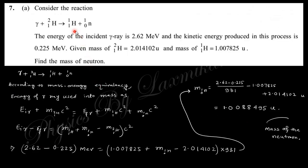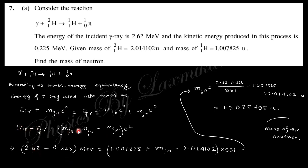The next question considers the nuclear reaction: gamma + tritium → hydrogen + neutron. The energy of the incident gamma ray and the kinetic energy produced in the process are given, along with the masses of hydrogen and tritium. Using mass-energy equivalence, the initial gamma energy plus the rest mass energy of tritium equals the rest mass energy of the products plus kinetic energy. Taking the difference and converting units — mass in atomic mass units multiplied by 931 MeV/u — we obtain the mass of the neutron.